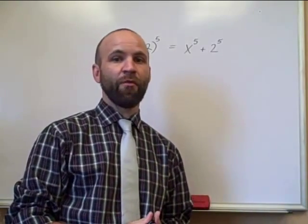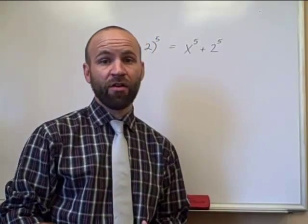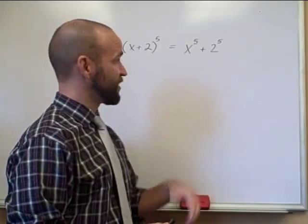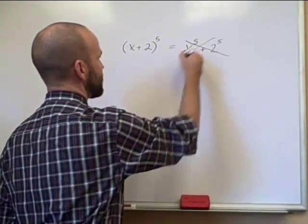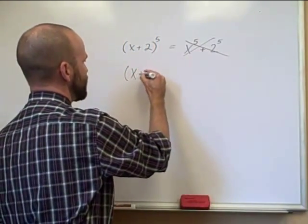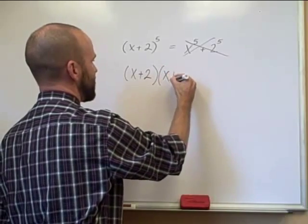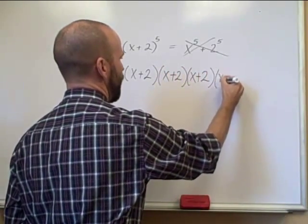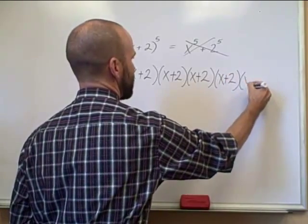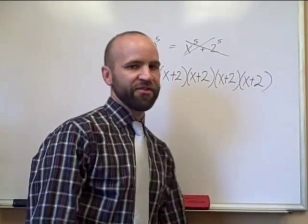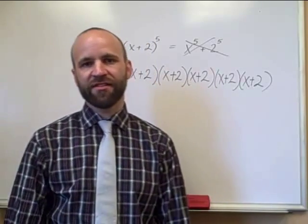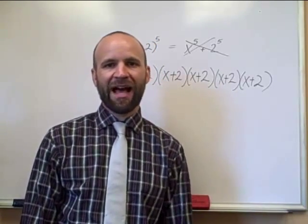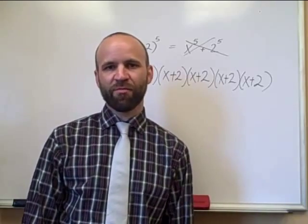If you do think that's correct, you should go back and watch one of my other videos called Freshman's Dream, because that's the name given to this mistake. x plus 2 to the 5th power really means we're multiplying x plus 2 by itself five times. And that is going to be a whole lot of work — it's going to take you a very long time, and your chances of making a mistake are fairly high. So we would like to do this more efficiently.